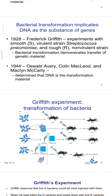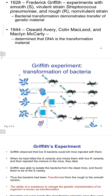Let us understand how bacterial information implicates DNA as the substance of genes. In 1928, Frederick Griffith conducted an experiment with the smooth (S) virulent and rough (R) non-virulent strains of Streptococcus pneumoniae. Bacterial transformation demonstrated the transfer of genetic material. In a second series of experiments in 1944, Oswald Avery, Colin MacLeod, and Maclyn McCarty determined that DNA is the transformation material.